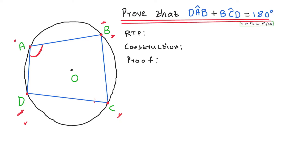Every time when you want to prove a cyclic quad, the first step is to write the required to prove, which is your RTP. Then you do your construction. In Grade 11 Euclidean geometry, all questions will require you to draw or construct radii.